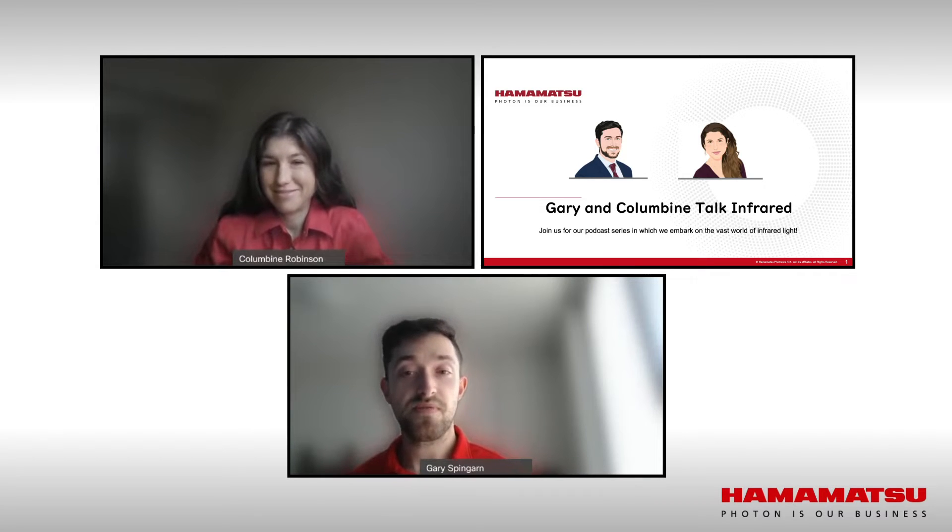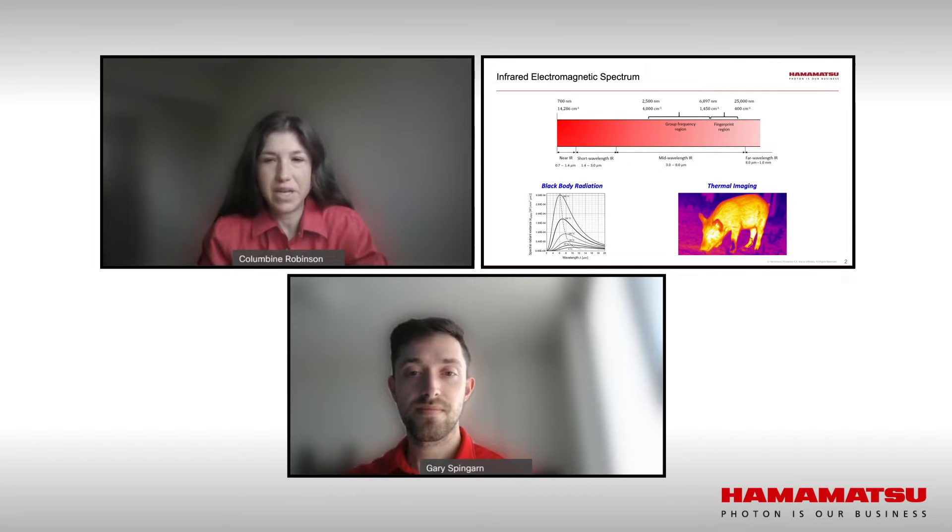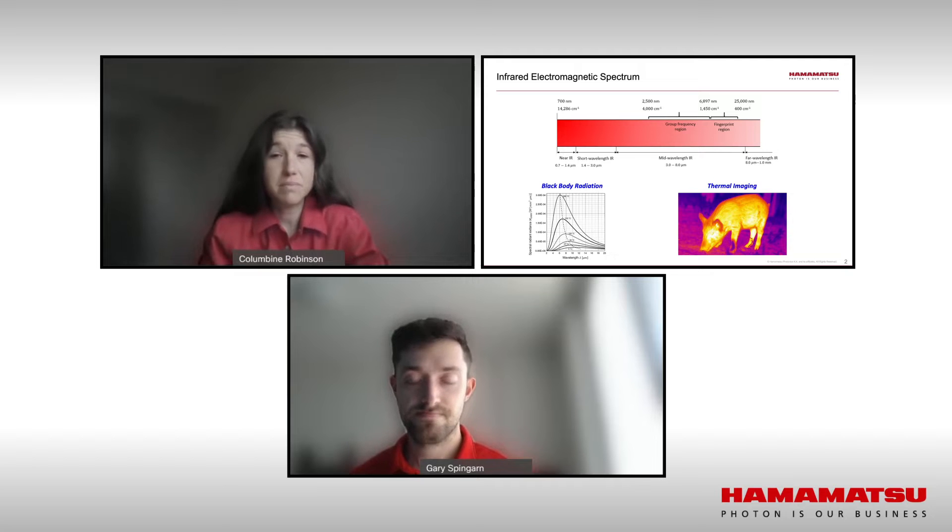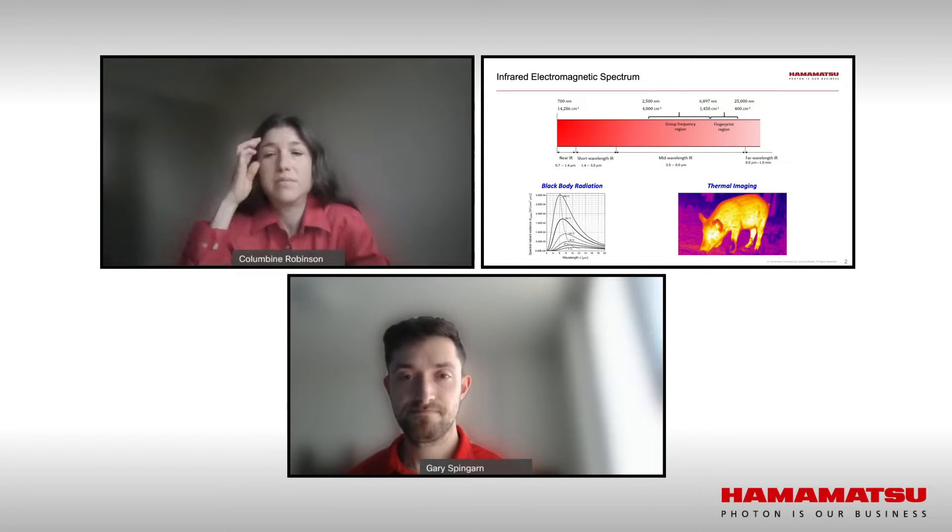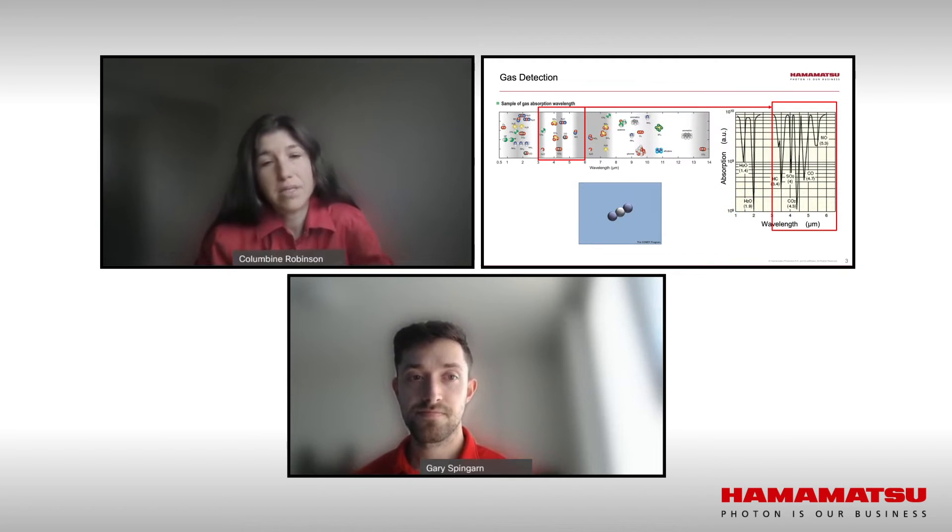So Columbine, since you have a physics background, do you care to explain what infrared light is? I'd be happy to. Infrared light is electromagnetic radiation with wavelength longer than that of visible light, meaning it's invisible to the human eye. It basically covers anywhere from 700 nanometers to one millimeter. One application we're going to talk about is gas detection. Gases actually absorb infrared light at specific wavelengths.